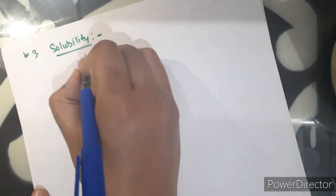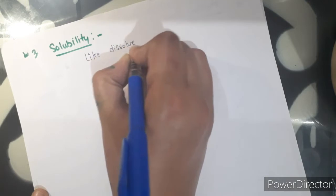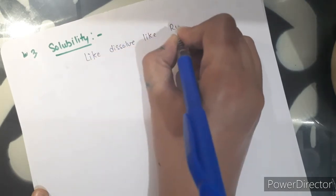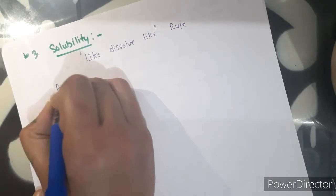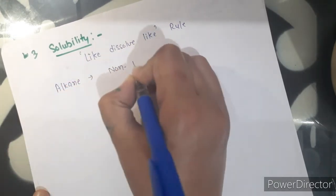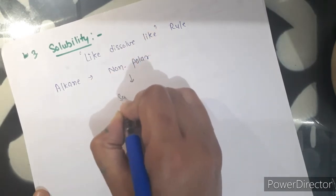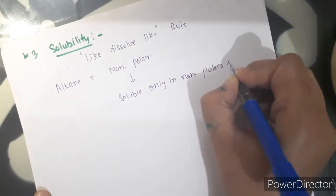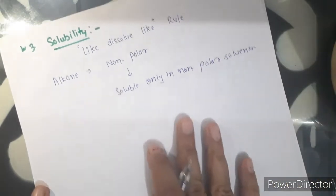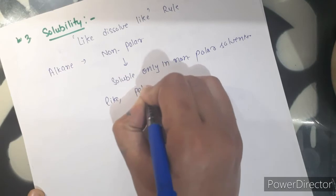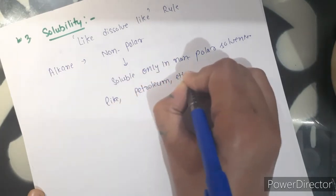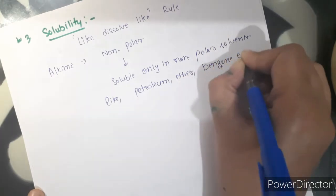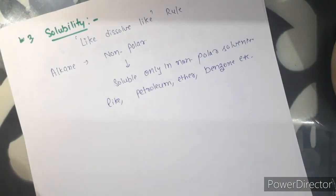Third is solubility. They follow the like-dissolves-like rule. We know that alkanes are non-polar by nature, so they are soluble only in non-polar solvents like petroleum, ether, benzene, etc. And they are insoluble in polar solvents like water, alcohol, etc.